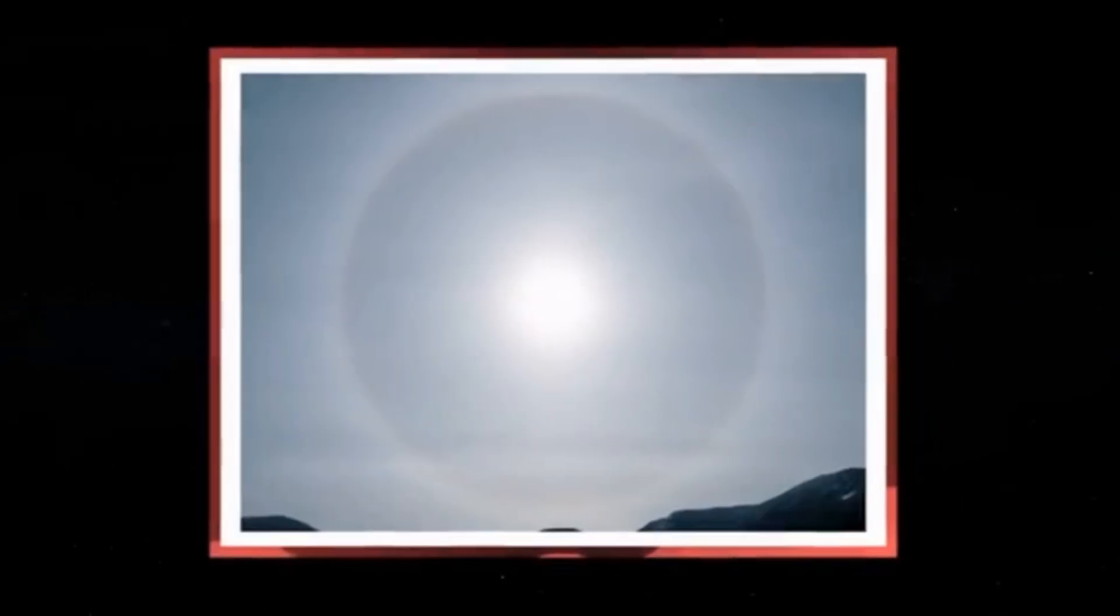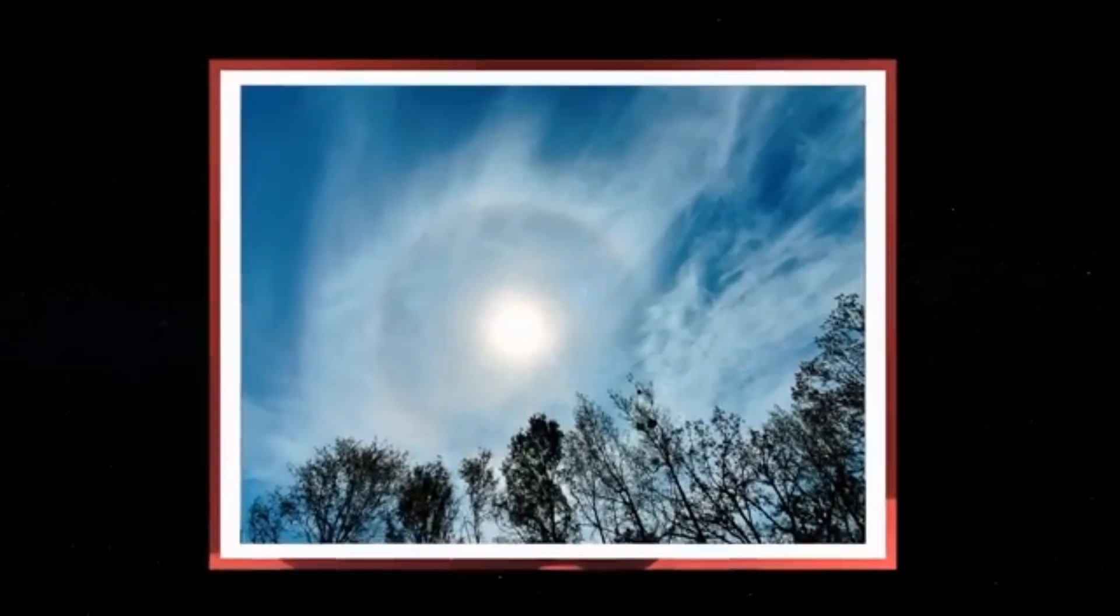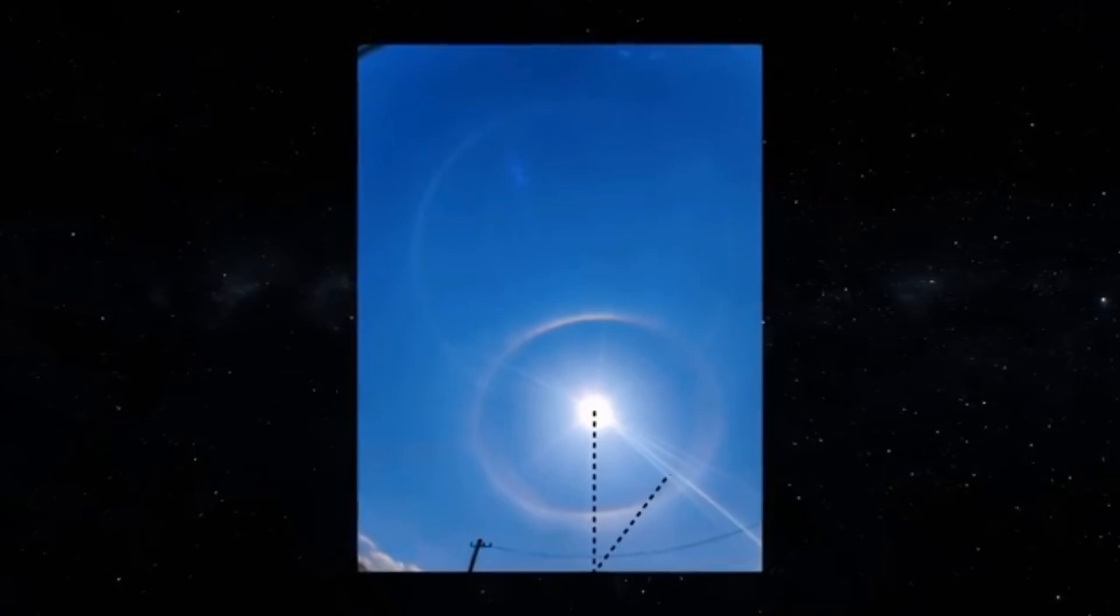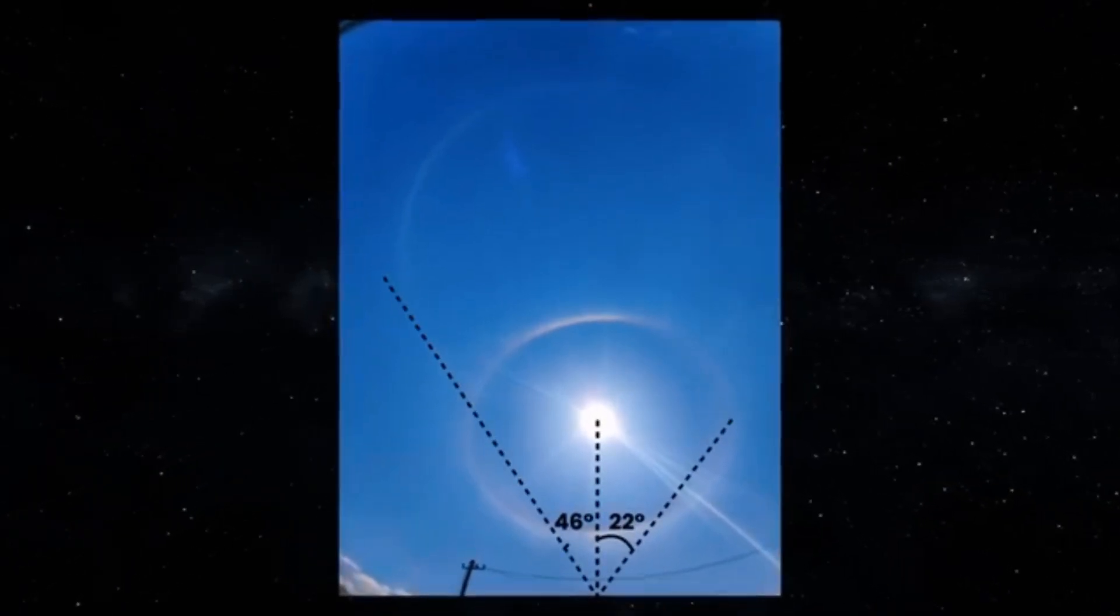Finally, what about the rings of light sometimes seen around the sun? These are called sun halos, created when sunlight passes through ice crystals in the atmosphere, bending and reflecting the light to form a ring. These halos, while rare, are completely natural and can be explained by science.